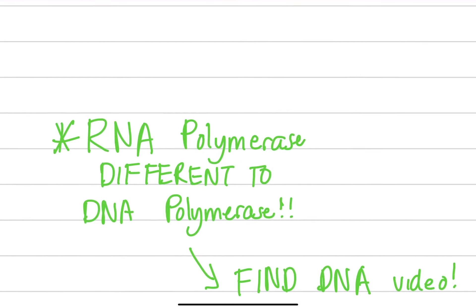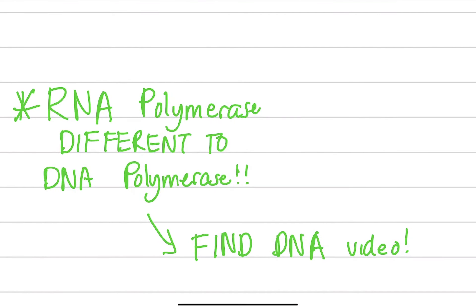Another thing I want to talk about is the difference — do not confuse RNA polymerases with DNA polymerases. Think about it: if we have transcription, transcription is a process where mRNA is being formed, so that's why we have RNA polymerases. If the end goal is a different RNA, we're going to use the RNA polymerase. But if we're trying to make a DNA strand from DNA, we're going to use DNA polymerases. So don't confuse these two.